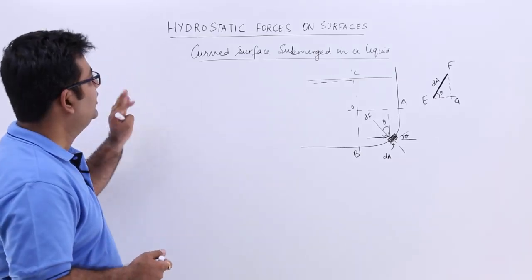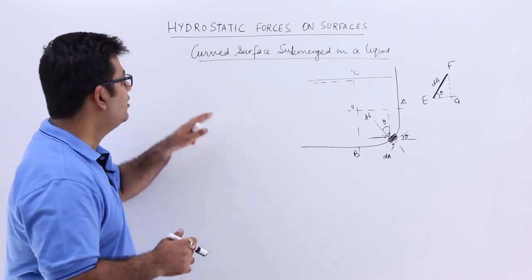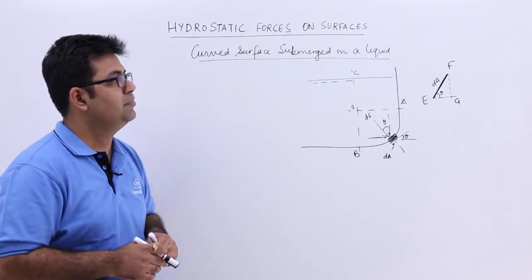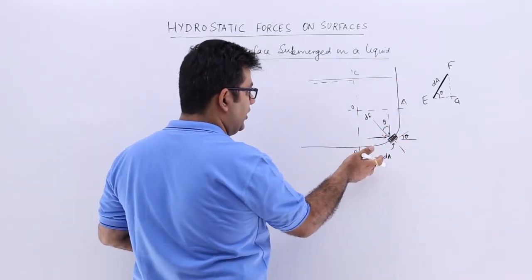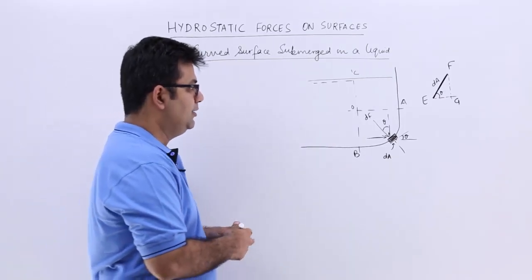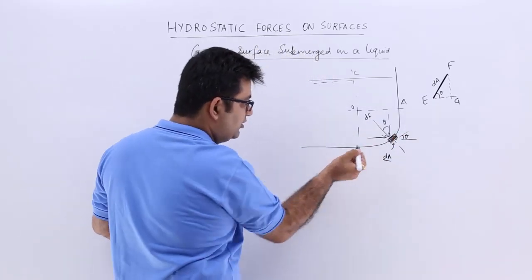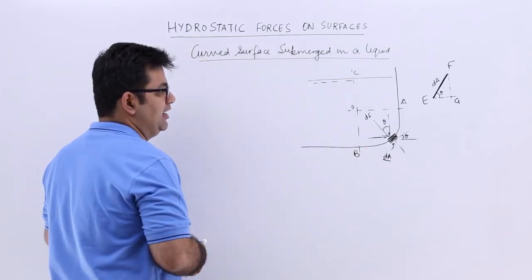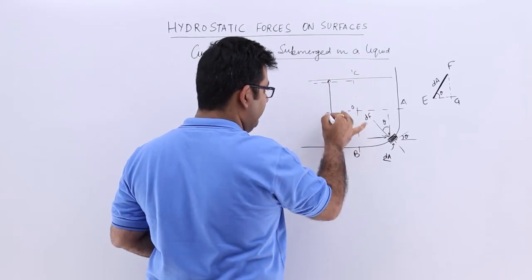Now let's talk about the fourth case of the hydrostatic forces on surfaces — the curved surface which is submerged in a liquid. This is the figure: you see a curved surface which is part of a container consisting of a certain liquid. We take a small area dA on this curved surface, and this area dA is at a depth of h from the free surface.